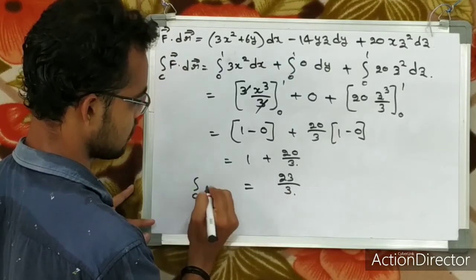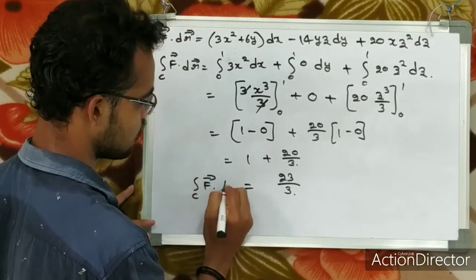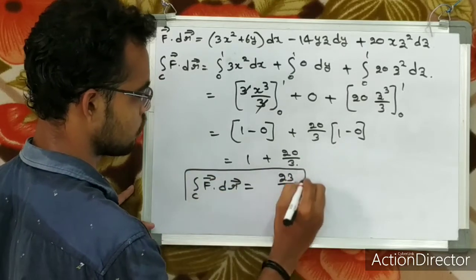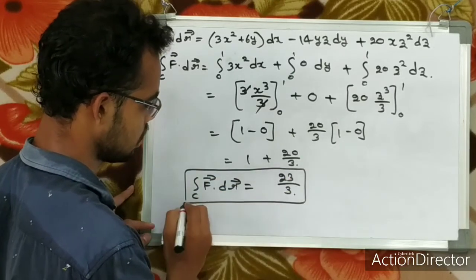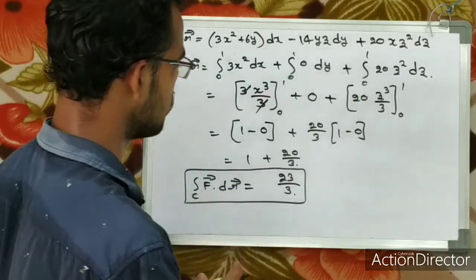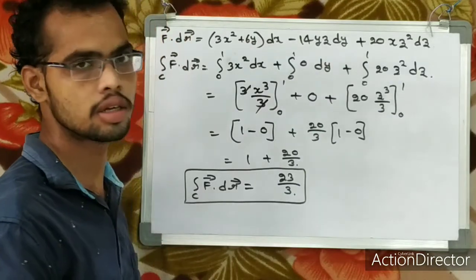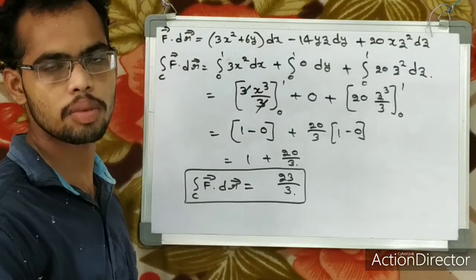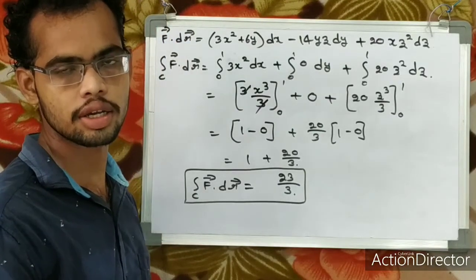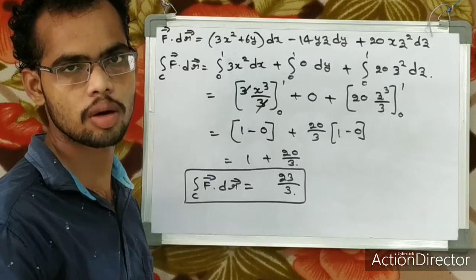So the line integral along the curve C of f vector dot dr vector equals 23 by 3. Thank you friends — if you have any doubts, please comment in the comment section.